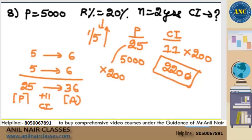A beautiful application of CI problems. Just by knowing the concept: 20% is 1 by 5, so 5 increases by 1 to become 6. Again 5 increases by 1 to become 6. So 5 fives are 25, and 6 sixes are 36. 25 becomes 36, CI is nothing but 11. For principal 25, CI is 11 — for 5000, how much?